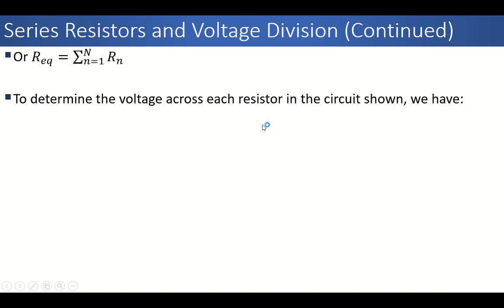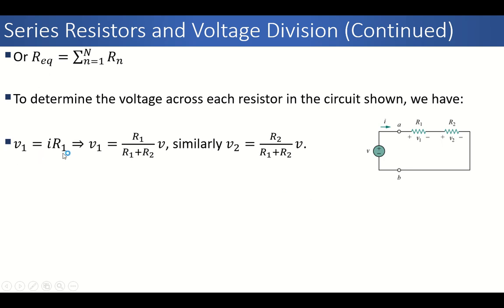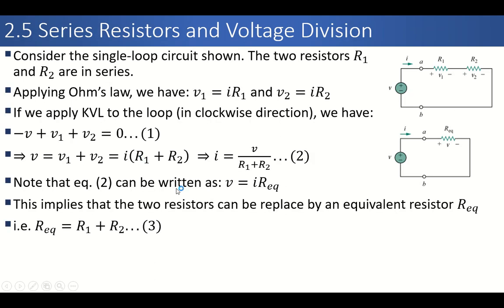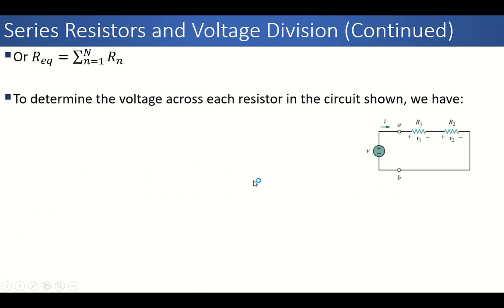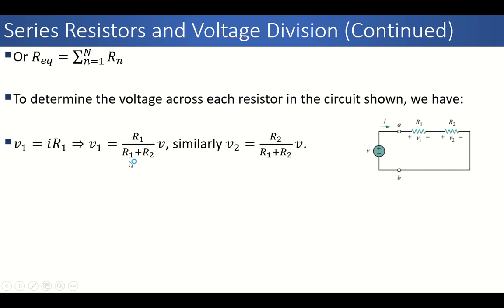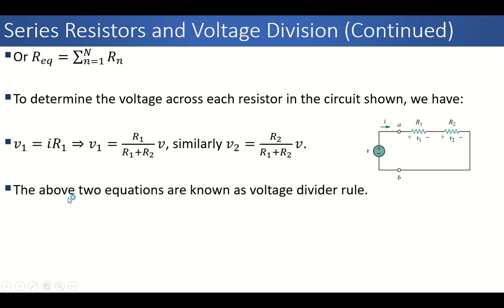Now we can determine the voltage across each resistor. We want to find V1 and V2. Using Ohm's law, since V1 = I × R1 and I = V / (R1 + R2), we get V1 = [R1 / (R1 + R2)] × V. Similarly, V2 = [R2 / (R1 + R2)] × V. These two equations are known as the Voltage Divider Rule, or VDR. In a series circuit, voltage is divided while current remains the same.